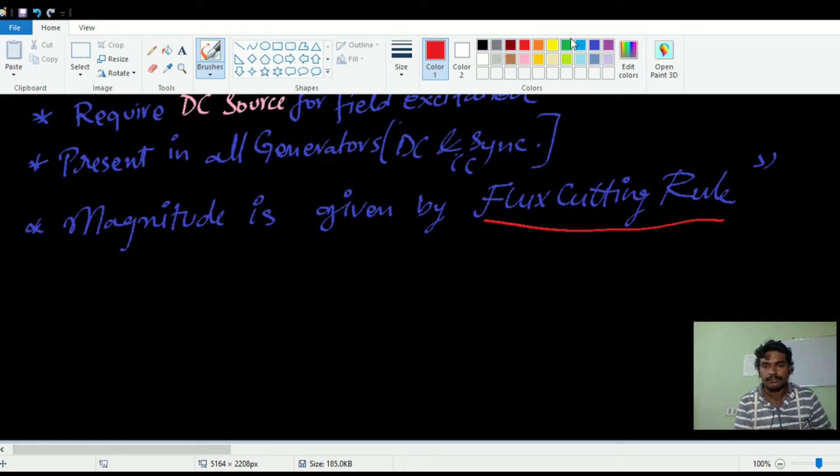According to flux cutting rule, suppose there is a constant magnetic field. I place a conductor in that magnetic field, where B is the flux density of that magnetic field.